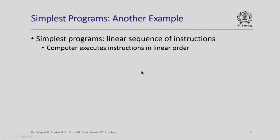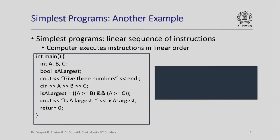Here is another example of sequential execution: a program that takes three numbers and tells us whether the first number is the largest of the three. The first statement is a declaration — nothing for the computer to do, it just tells the compiler how much storage to allocate. The second statement declares 'is_a_largest' as a boolean variable, again just telling the compiler how much memory to allocate.